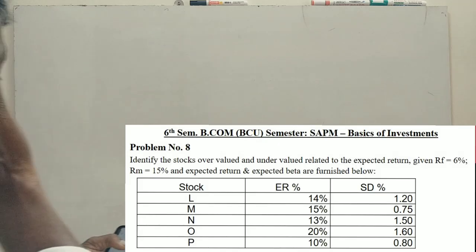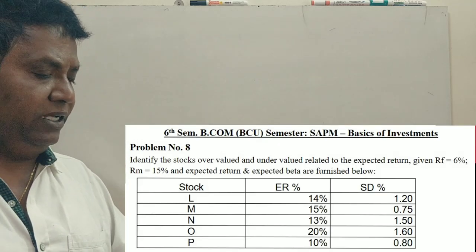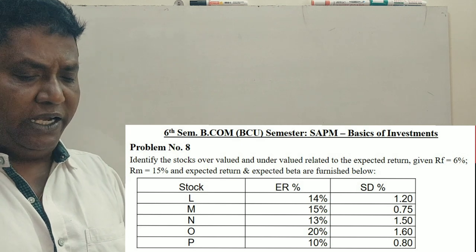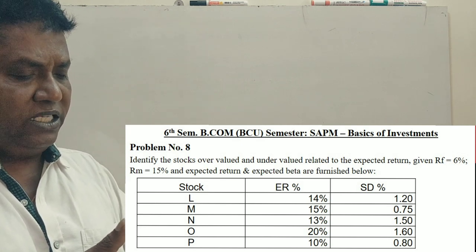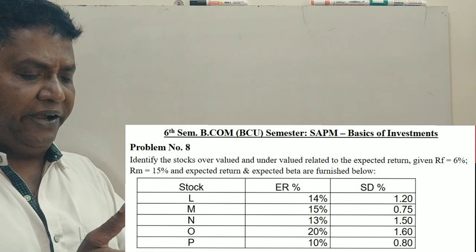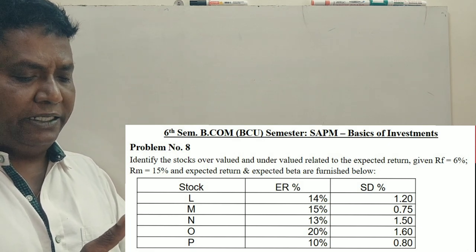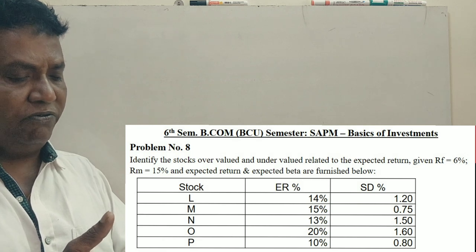The question is: identify the stock overvalued and undervalued related to expected return, given risk-free is 6%, market return is 15%, and expected return and expected beta are furnished below.